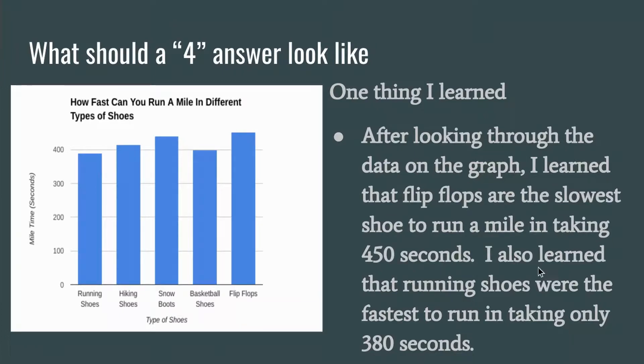I also learned that running shoes were the fastest, and then again I addressed the data saying the time. So they ran it in 380 seconds on average. So by addressing the data, by putting 450 seconds and 380 seconds, I provided evidence for my claim. I claim that flip-flops are the slowest. The 450 seconds of time is evidence for that claim. I also claimed that running shoes were the fastest, and by saying it took 380 seconds in running shoes, that's evidence for that claim.